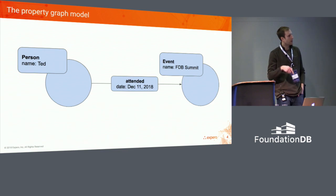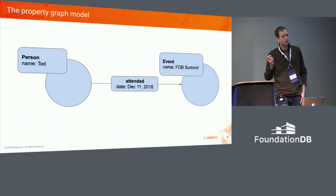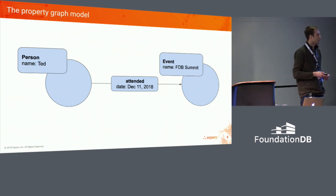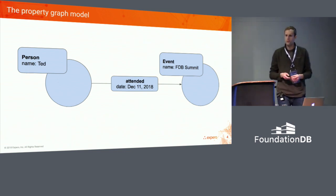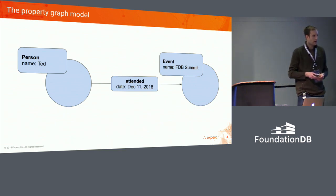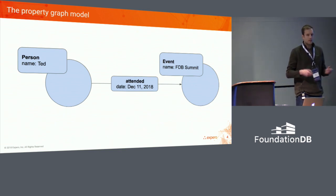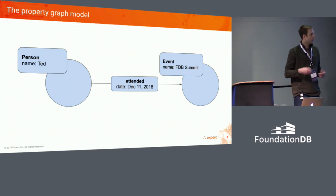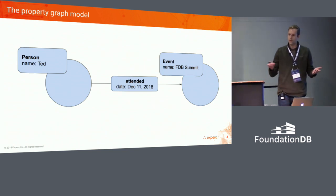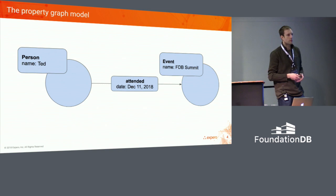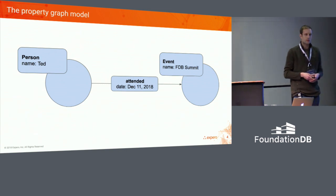Today I'm going to talk about graph databases, specifically the property graph data model. You may have heard of triple stores and RDF and things like that, but I'm going to be talking about property graphs. Property graphs have a basic idea where you have vertices and edges. Both vertices and edges can have labels, and then they can have properties — just properties being key-value pairs. Pretty simple model.